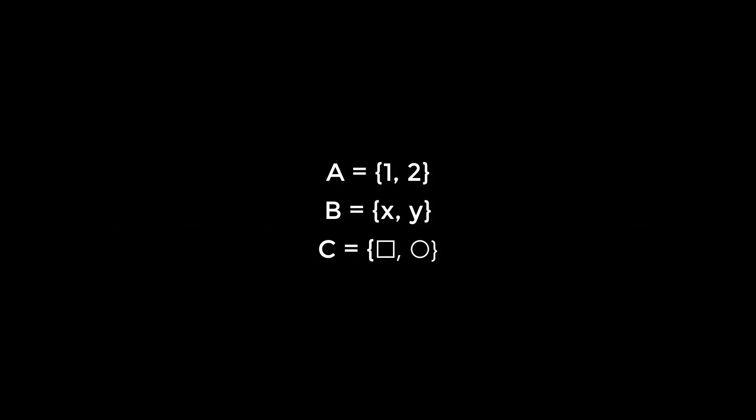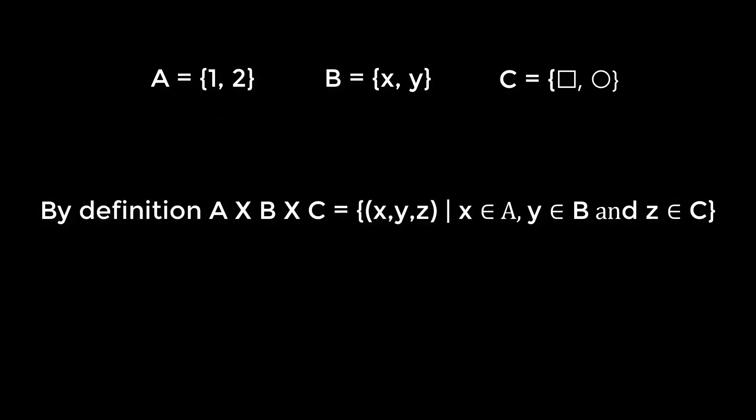Now, what about the Cartesian product of three sets? Suppose we have three sets A, B, and C. The elements of A are 1, 2; the elements of B are X, Y; and the elements of C are a square and a circle. By definition, A cross B cross C is the set of (X, Y, Z) such that X belongs to A, Y belongs to B, and Z belongs to C. Let's find the Cartesian product of A, B, and C.